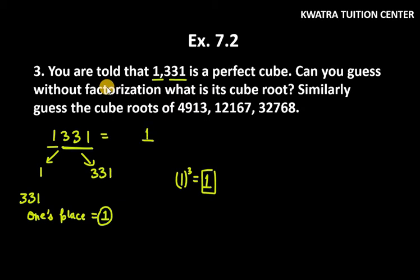Now for the first group, which is 1: 1 lies between 1 cubed and 2 cubed. The smaller number is 1. This means 1 is the tens place digit. So the cube root of 1331 is 11.